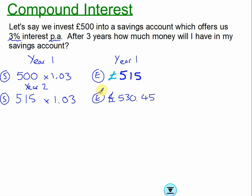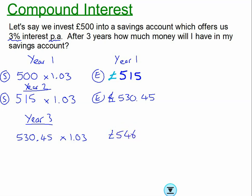That's the end of year two. Going into year three, I now start with £530.45, and the bank gives me another three percent interest. That gives me a total of £546.36. So at the end of three years you have earned £46.36 for free.